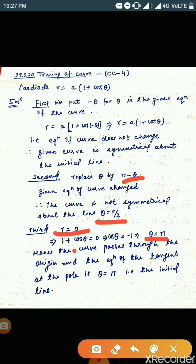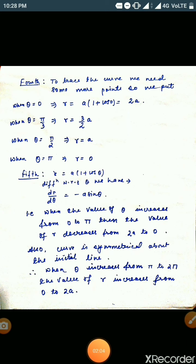Because 1 + cosθ = 0 implies cosθ = -1, which implies θ = π. Hence, the curve passes through the origin, and the equation of the tangent at the pole is θ = π. Therefore, the equation of the other tangent is the initial line.